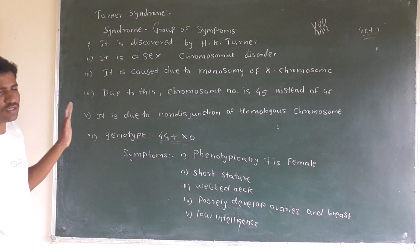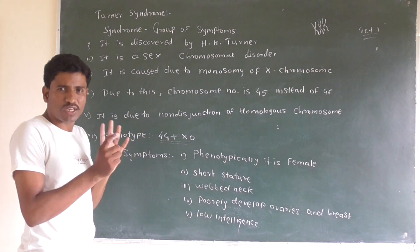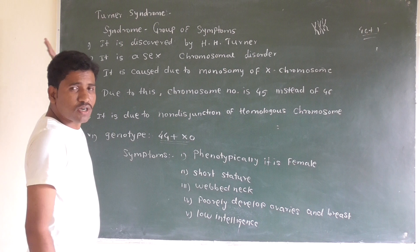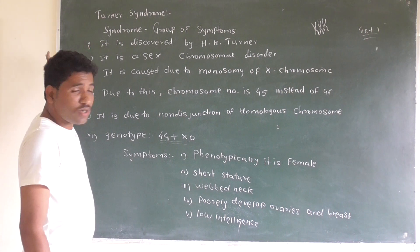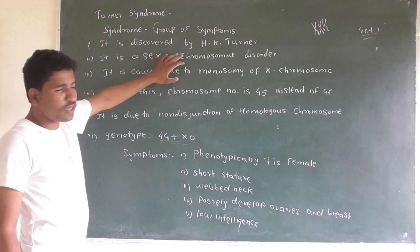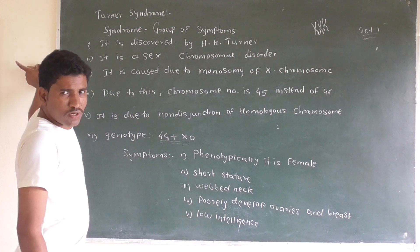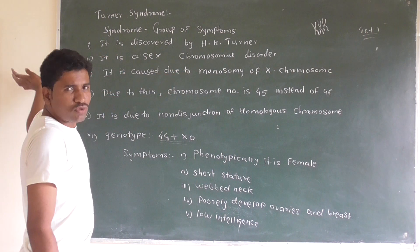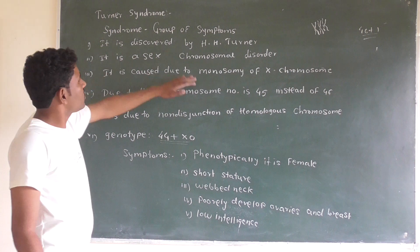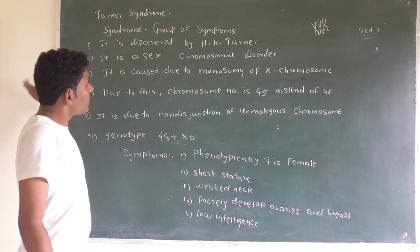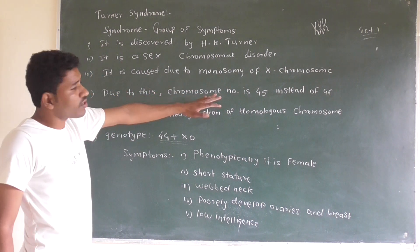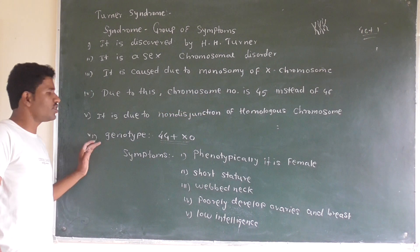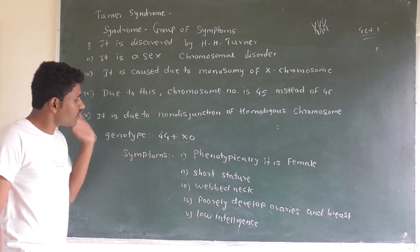To summarize: Down syndrome is an autosomal chromosomal disorder while Turner syndrome is a sex chromosomal disorder. In Down syndrome there is trisomy — chromosome number becomes 47. In Turner syndrome there is monosomy — chromosome number becomes 45. The cause in both cases is non-disjunction of homologous chromosomes.